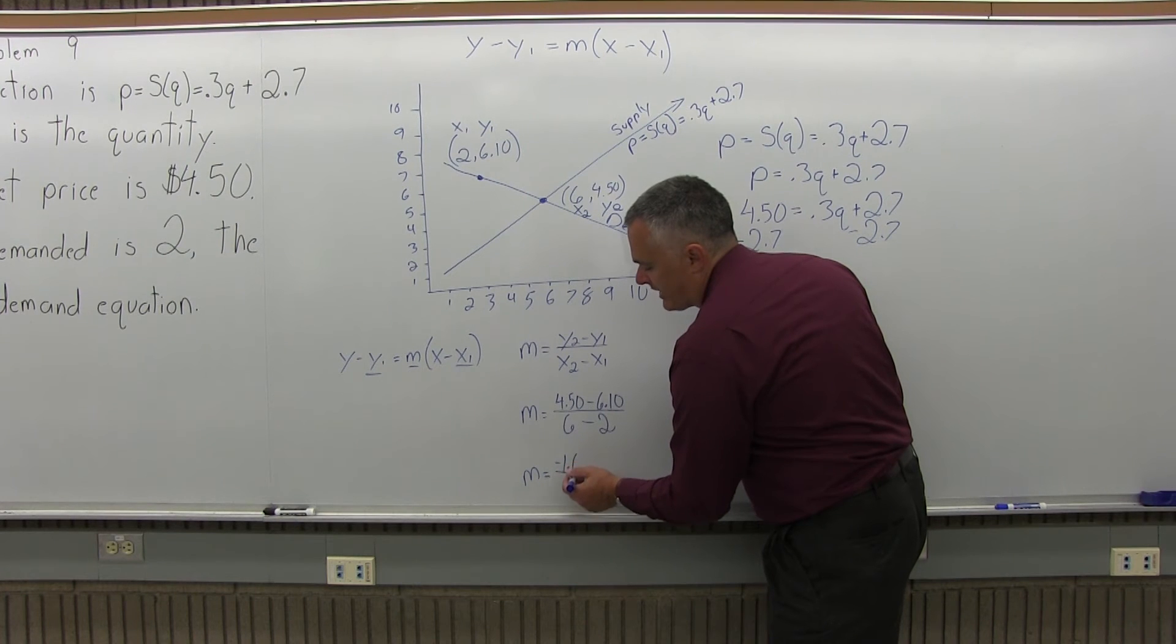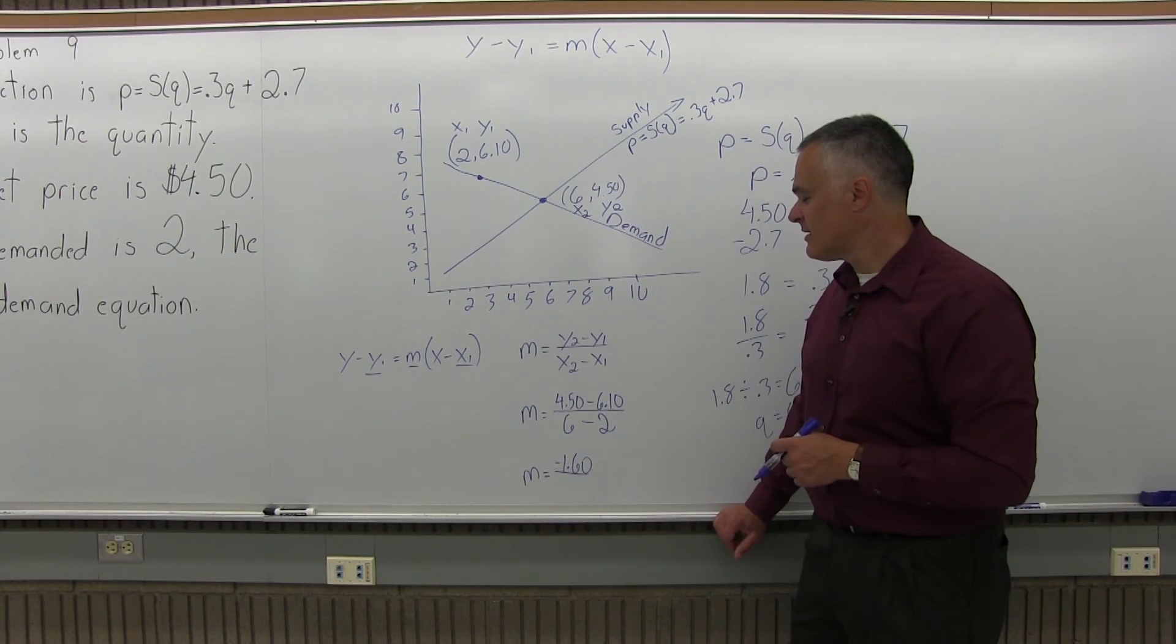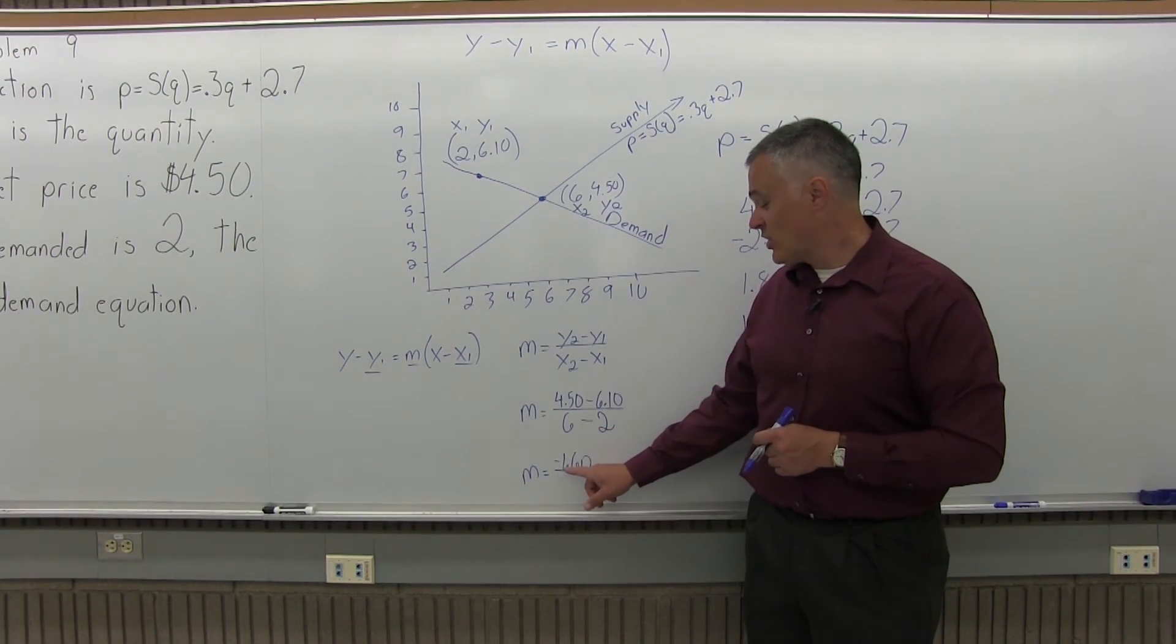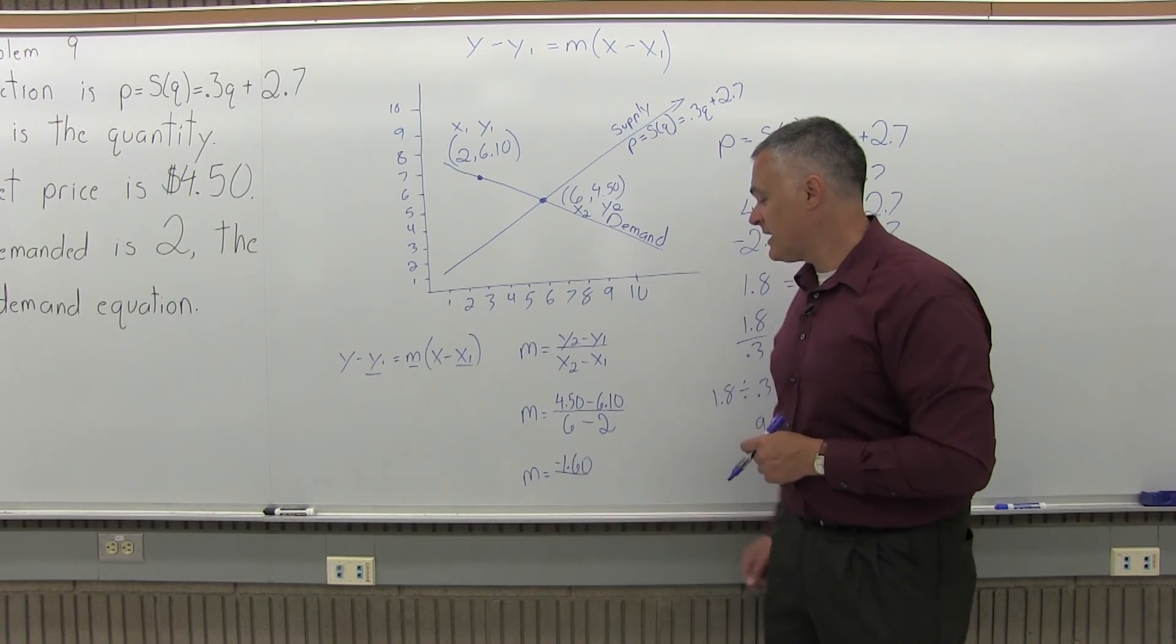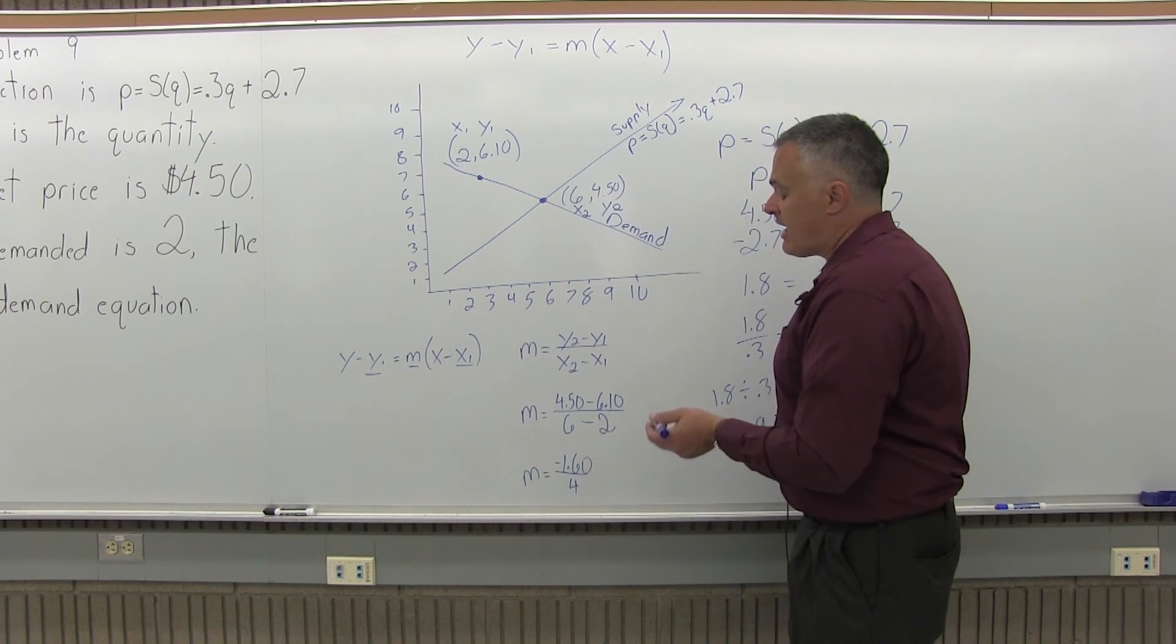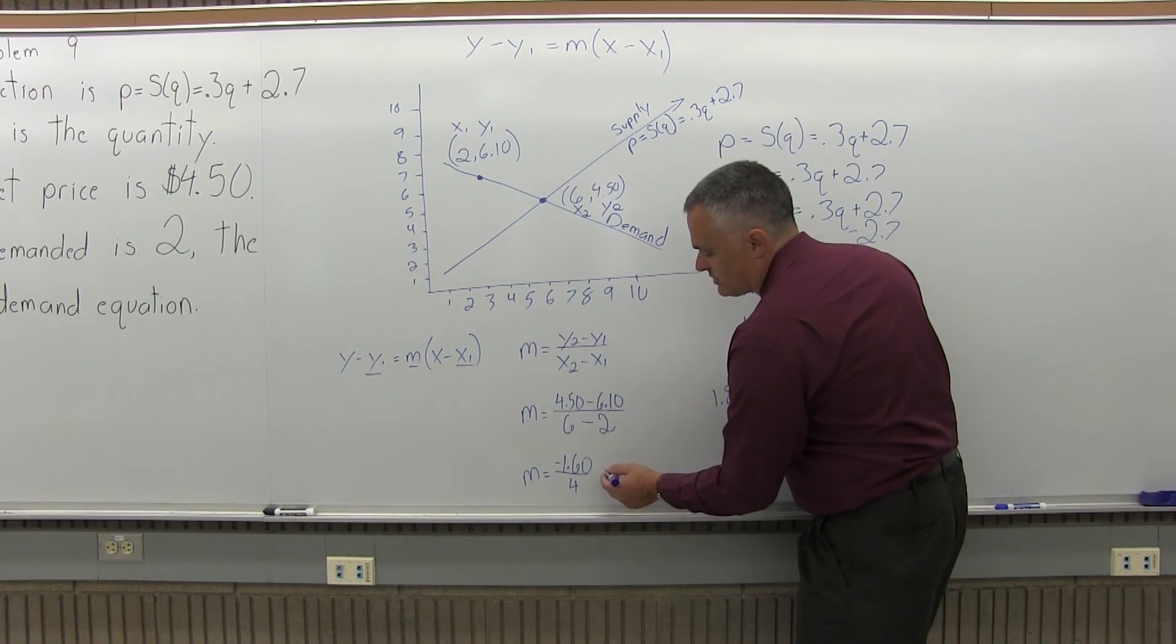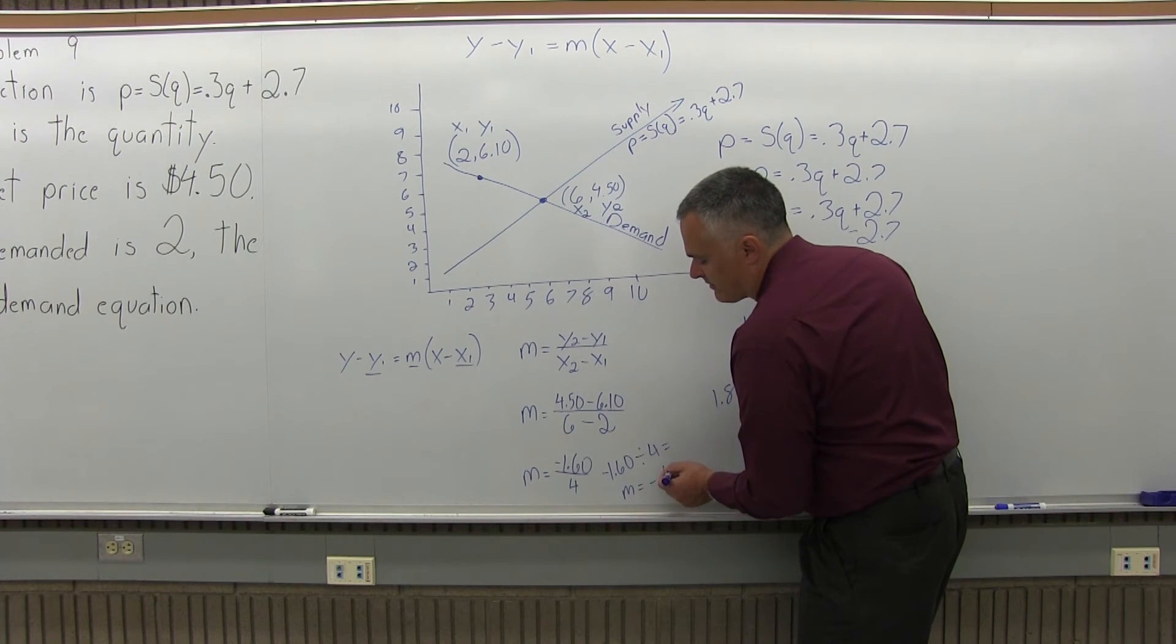As I do the subtraction in the numerator, I have $4.50 minus $6.10, which is negative $1.60. Don't forget the negative. In the denominator I have 6 minus 2, which is 4, positive 4. That gives me negative 0.40, or negative 0.4. Use your calculator: negative 1.60 divided by 4 equals negative 0.4.